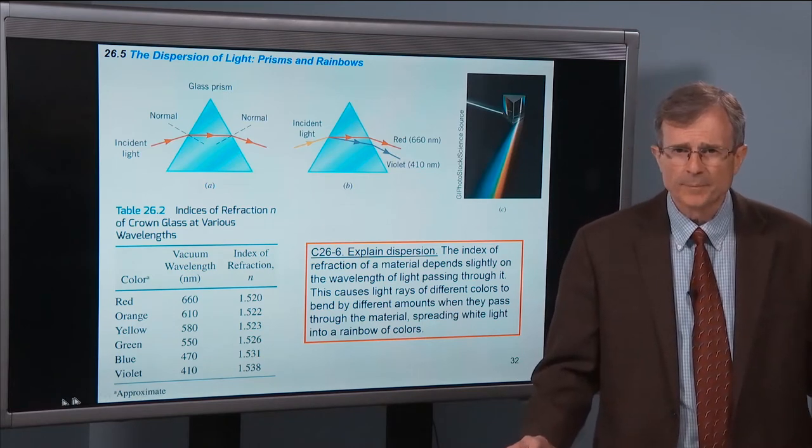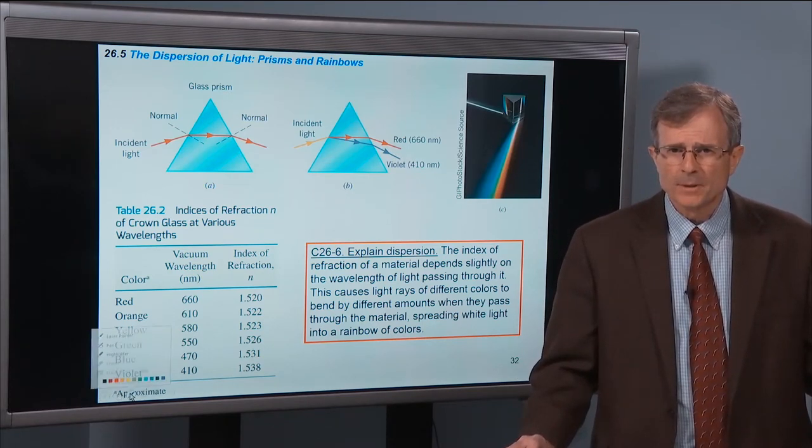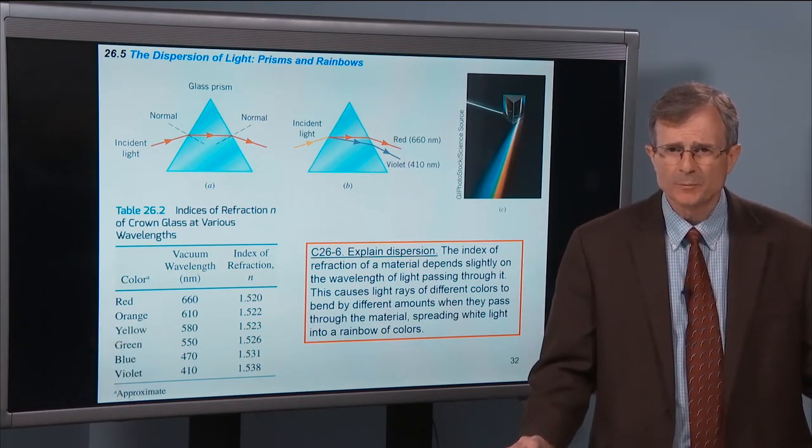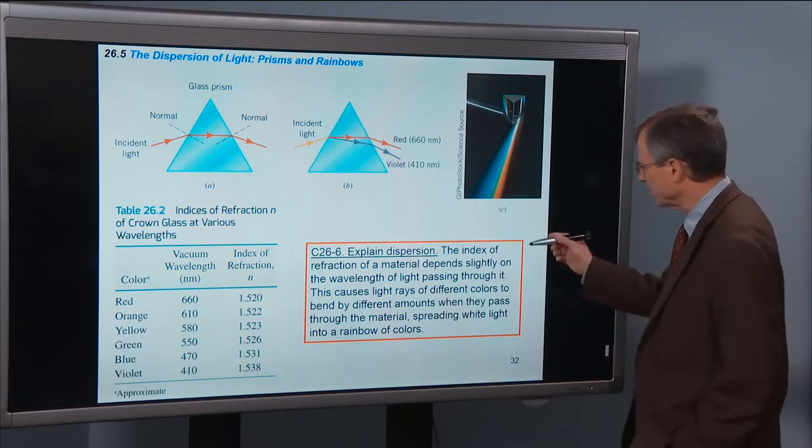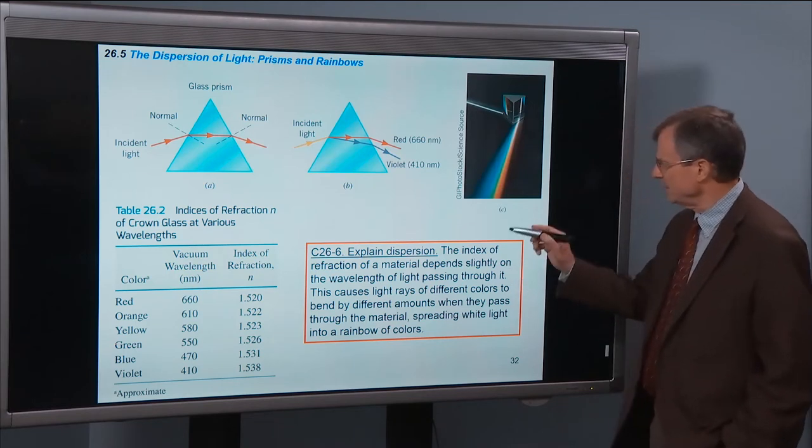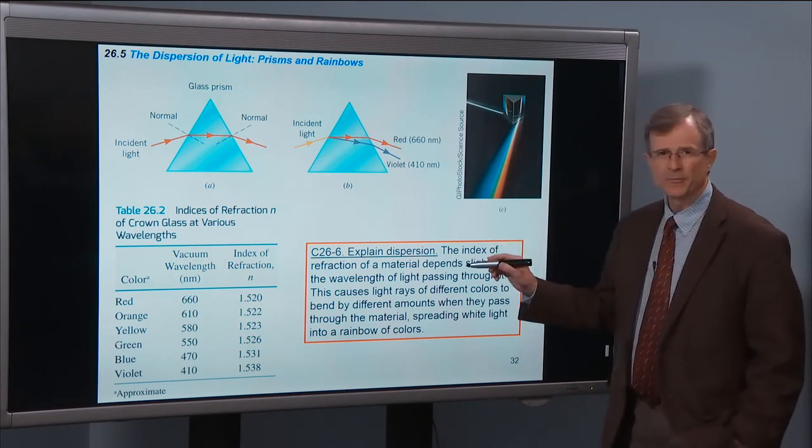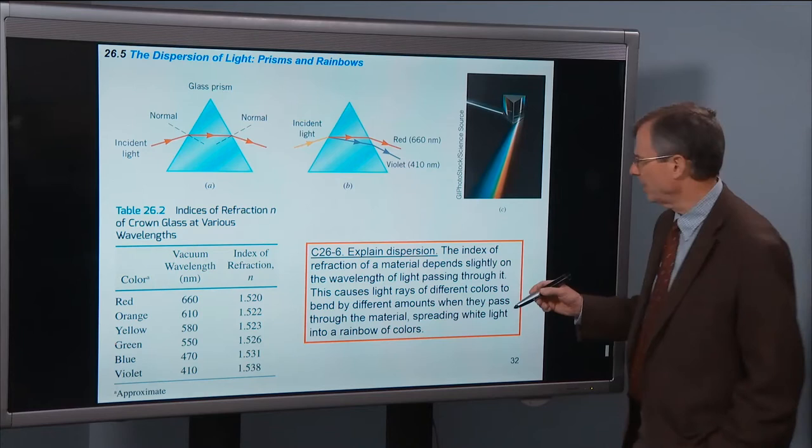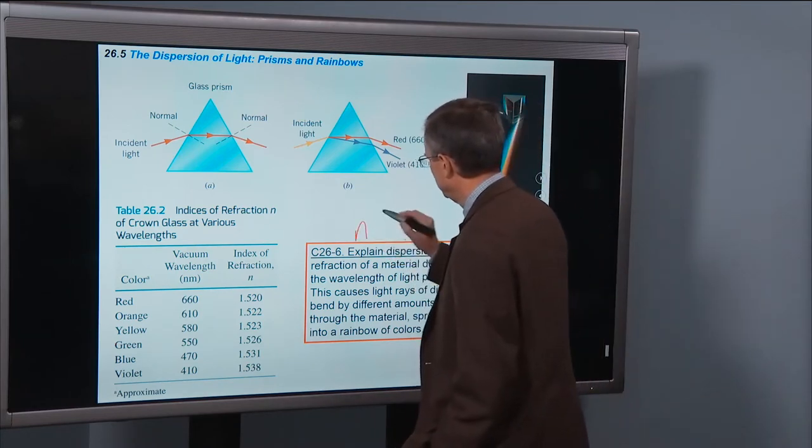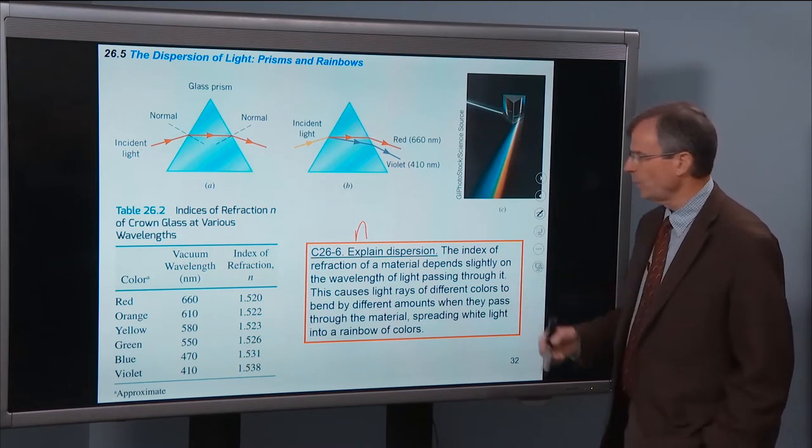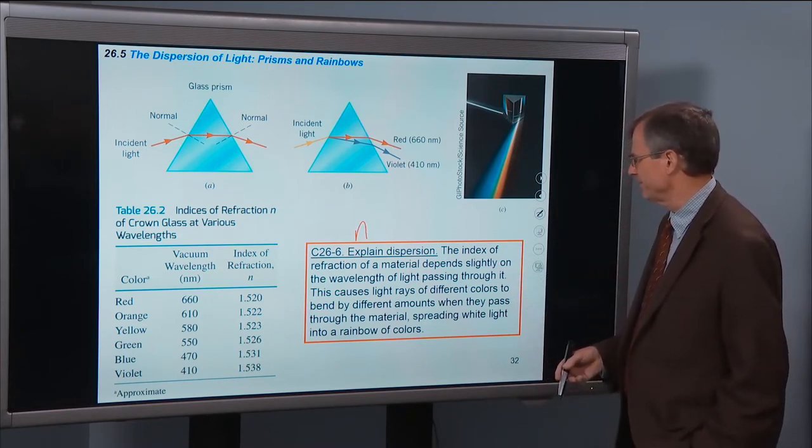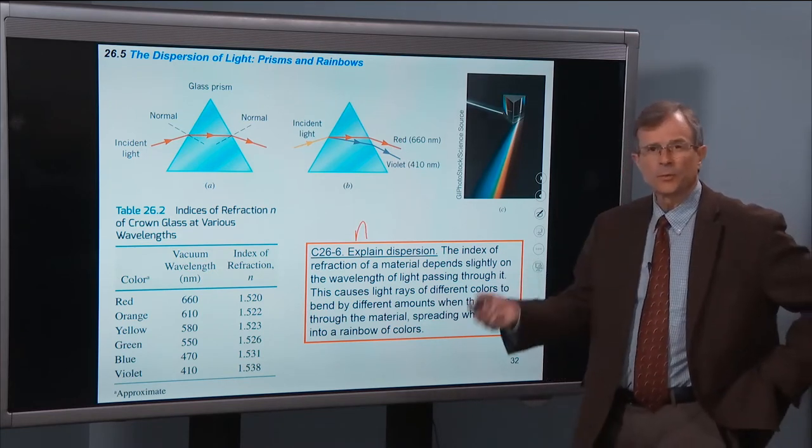Let's define dispersion. We basically defined it on the video, but here's the concept that deals with it. Explain dispersion. The index of refraction of a material, that's what we call n, depends slightly on the wavelength of light that is passing through the material.